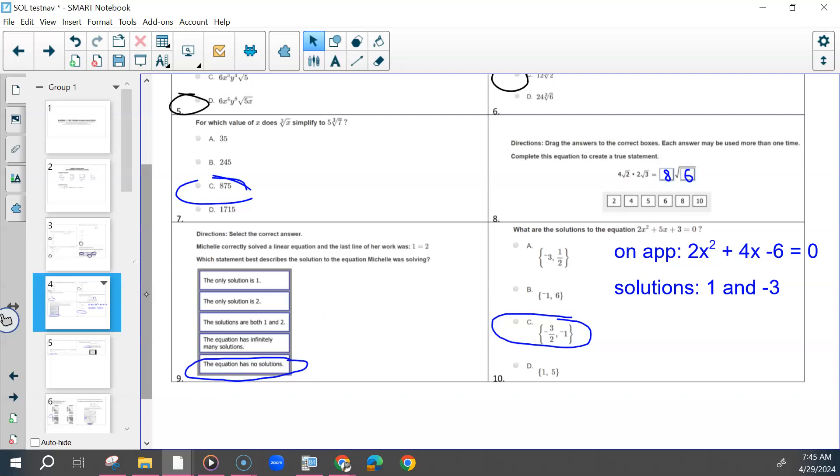So on the paper, the answer is C. On the app, the answers are 1 and negative 3, and the question is different.